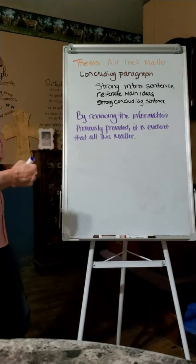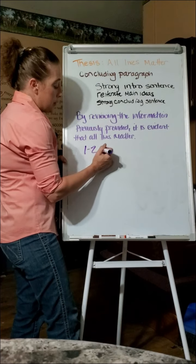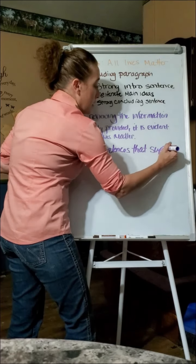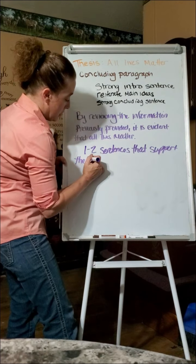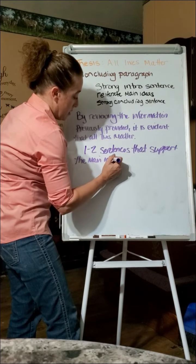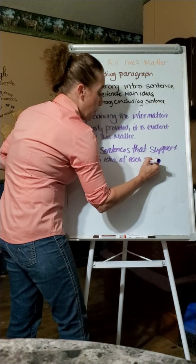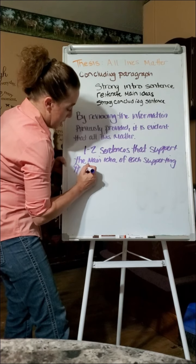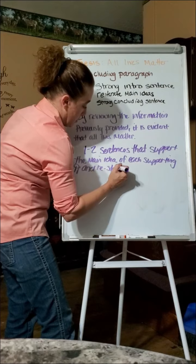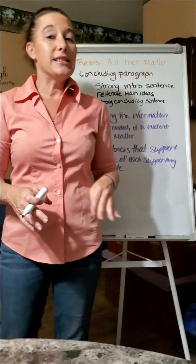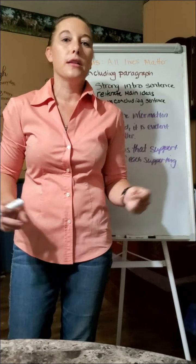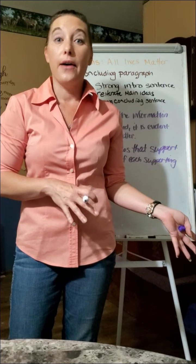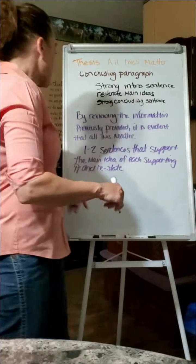When I say reiterate main ideas, what you are going to do is take one to two sentences that support the main idea of each supporting paragraph and restate. Now, I would suggest that you don't use the exact same sentences and the exact same terminology. However, you need to paraphrase them. It needs to be one or two sentences long. That way, you end up with the same length paragraph as you have to have for each academic paragraph, which is seven or more. And then, strong conclusion.